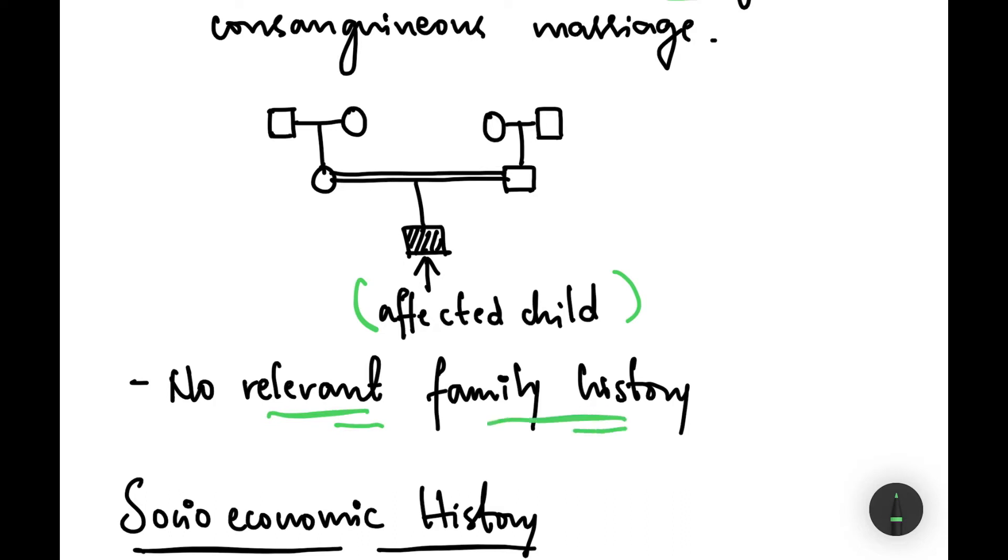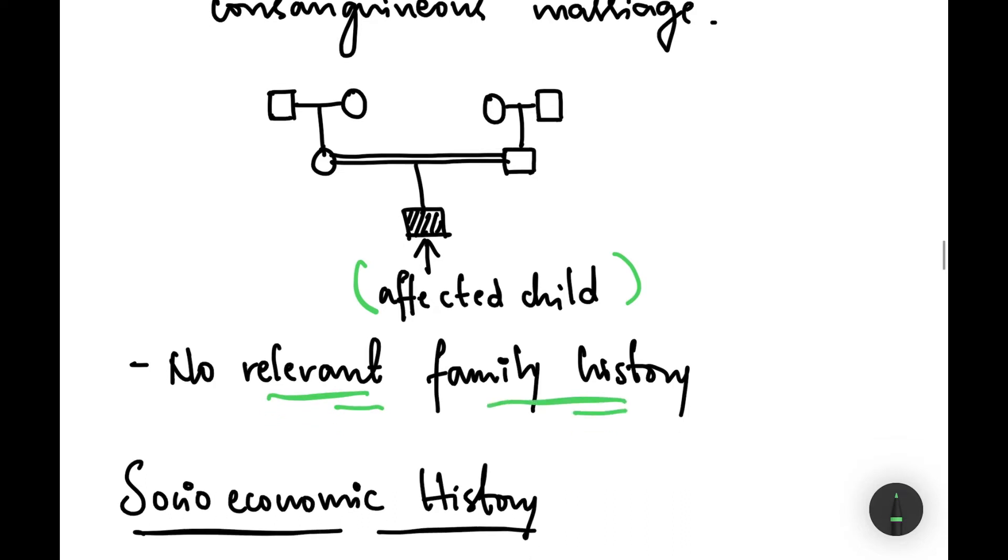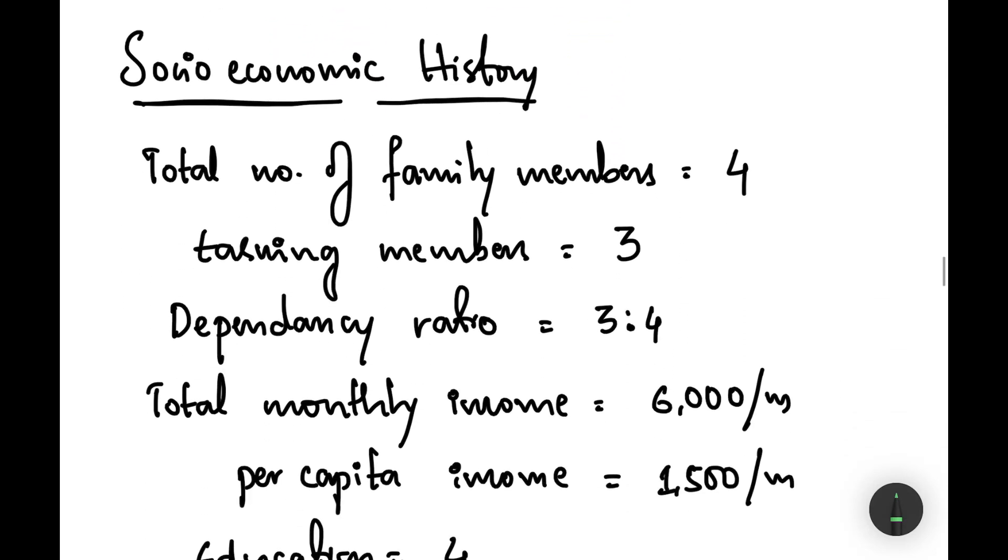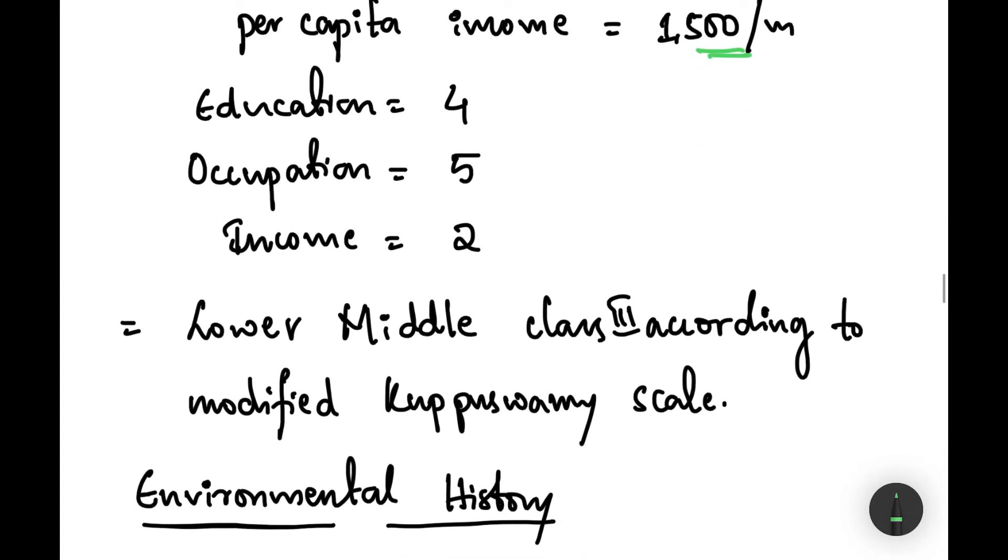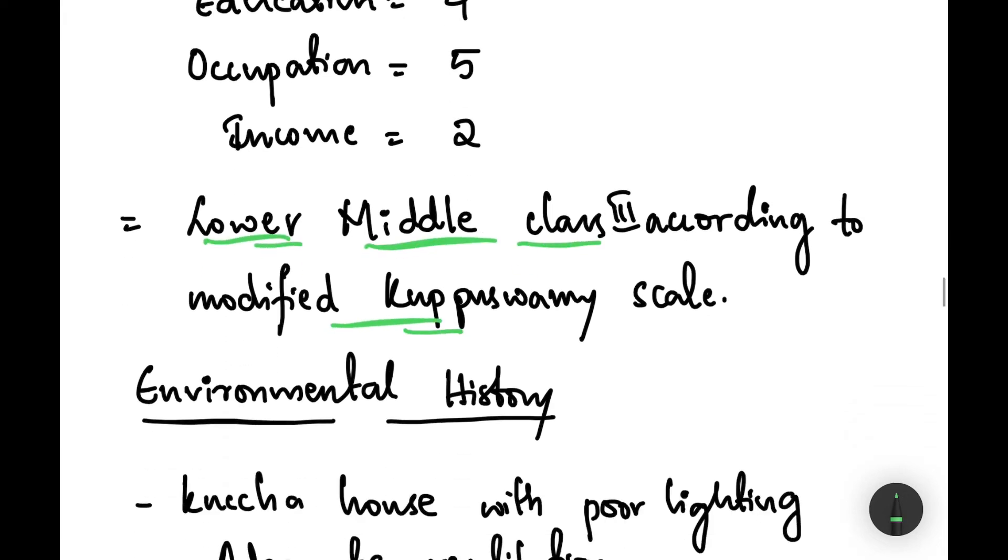Moving on to the socioeconomic history, total number of family members are four and earning members are three. Dependency ratio is three is to four. The total monthly income of the family is 6,000 per month, per capita income is 1,500 per month. According to modified Kuppuswamy scale, they belong to lower middle class 3 scale.